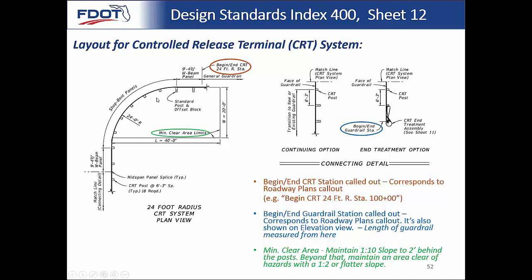As mentioned at the beginning of training, guardrail in general is not designed for 90-degree impacts — it's really designed for a shallow angle impact of about 25 degrees, keeping guardrail parallel to the roadway. This CRT system is one of the few cases designed to handle a 90-degree impact. With a vehicle coming from left to right hitting at 90 degrees, the only way it can function properly and capture that vehicle is through significant energy absorption, handled by all posts being special CRT breakaway posts.